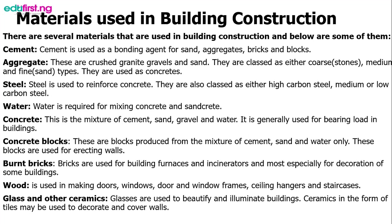Number nine is wood. It is used for making doors, windows, window and door frames, ceiling, hangers, staircases, and it is also used as formwork in construction. The importance of wood is as important as water, block and cement — all these are major materials used in building construction. We also have glass and other ceramics. Glasses are used to decorate and cover the floors. There are many other materials used in building construction not mentioned here, which you can research on your own.